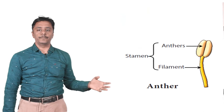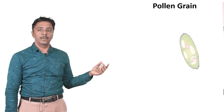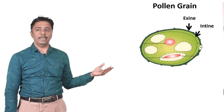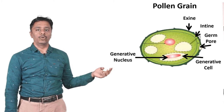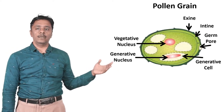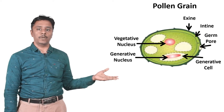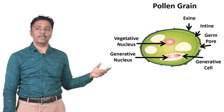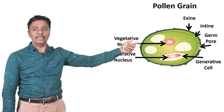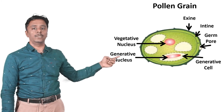The important first part is the anther. The anther consists of two important parts: anthers and filament, which together are called a stamen. The second part is the pollen grain. In the cross-section of the pollen grain, the outer part is called exine, the inner part is called intine, the next part is called germ pore, then generative cell, generative nucleus, and vegetative nucleus. Please make note of all these parts and their positions as they will come in diagram questions.